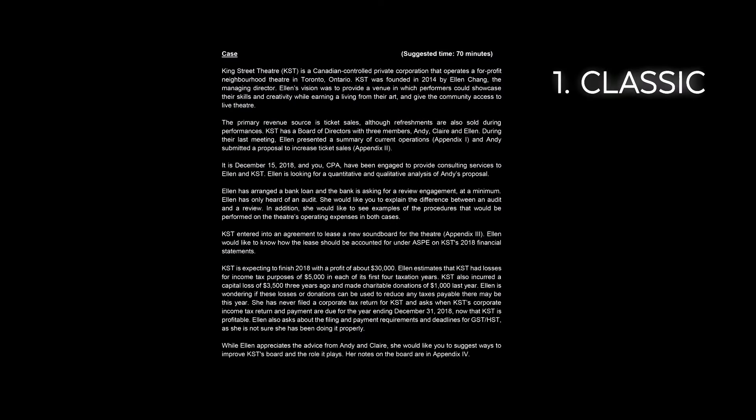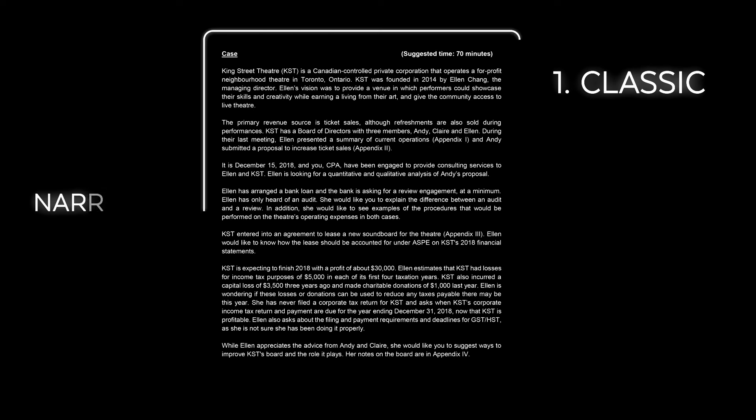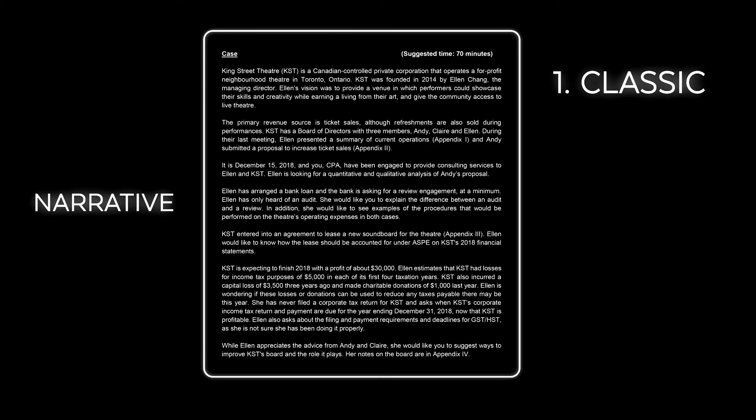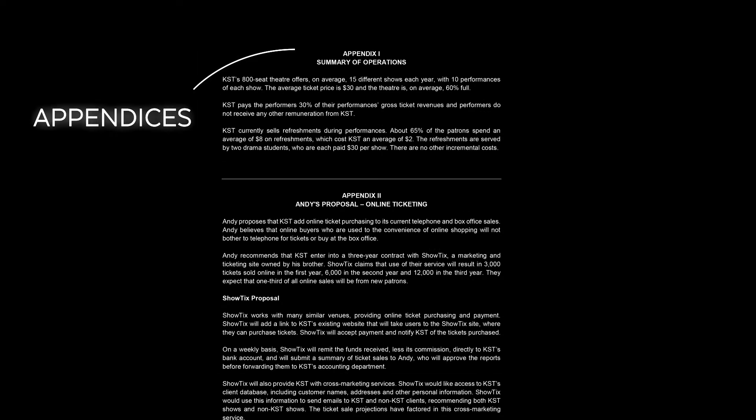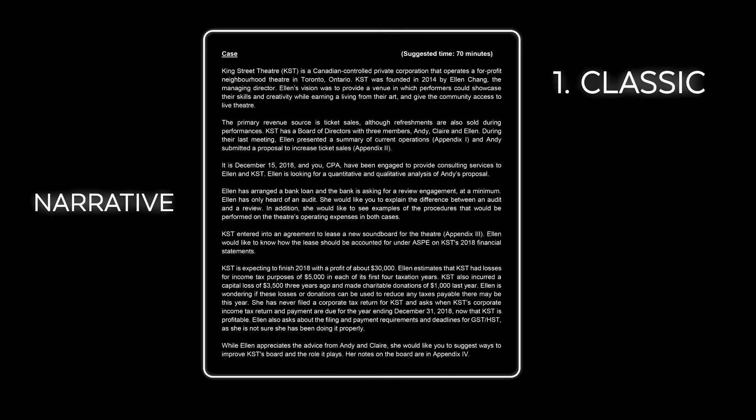Here's the first one: the classic. This is what you see often in Core 1. It has a narrative followed by appendices. The narrative uses a paragraph format and includes the background info, user info, and the required. You may or may not get financial statements.